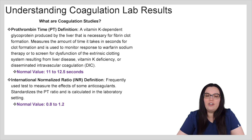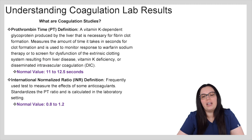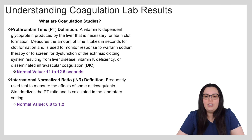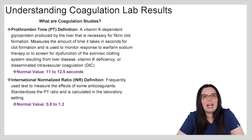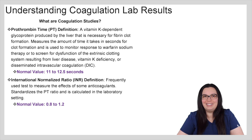Moving on to our international normalized ratio, the INR — it's frequently used to measure the effects of some anticoagulants. It standardizes the PT ratio and is calculated in the laboratory setting. The normal value you want to see is between 0.8 to 1.2.